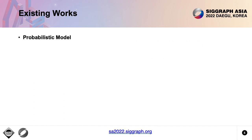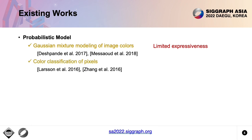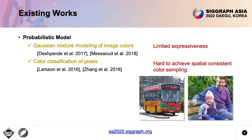Instead, probability model-based methods predict the color distribution rather than deterministic colors. Gaussian mixture modeling over image colors is only feasible for category-specific things because of limited expressivity. Per-pixel color classification can model the color distribution sufficiently, but it faces challenges in making spatially consistent color sampling.